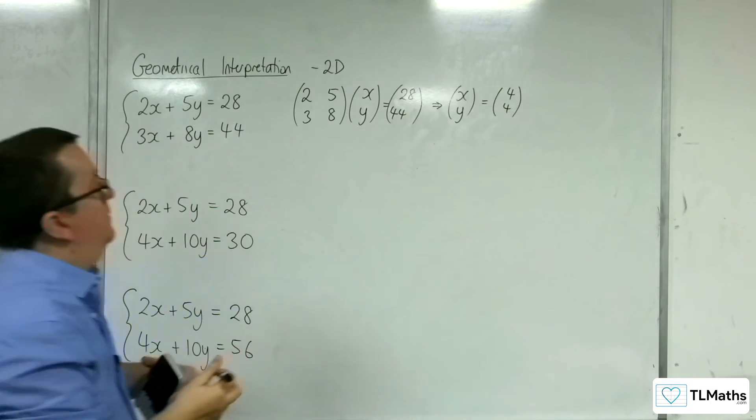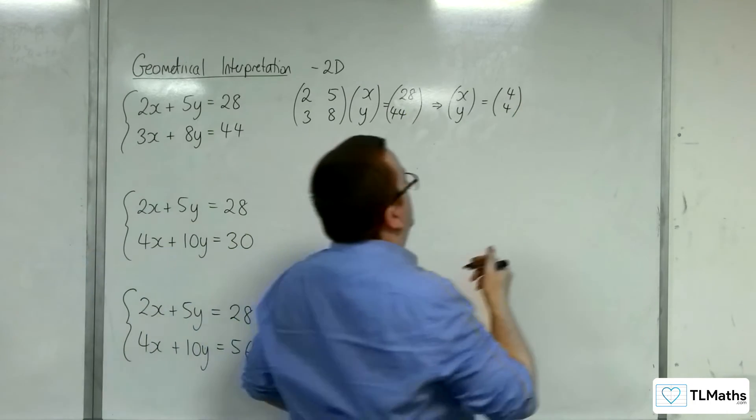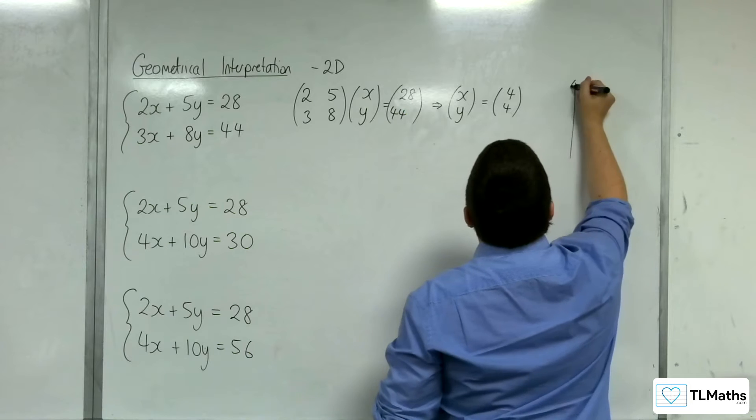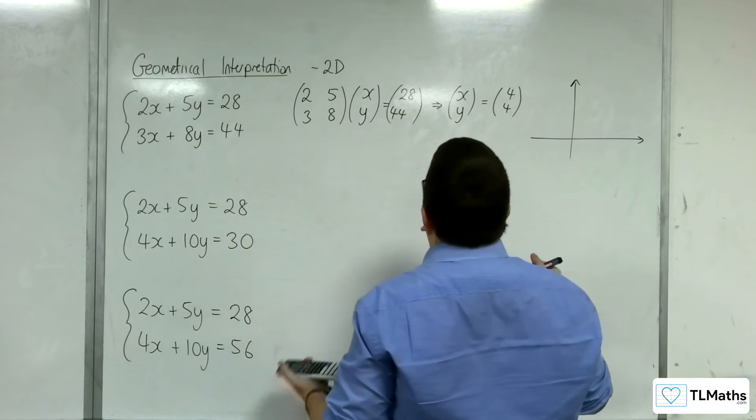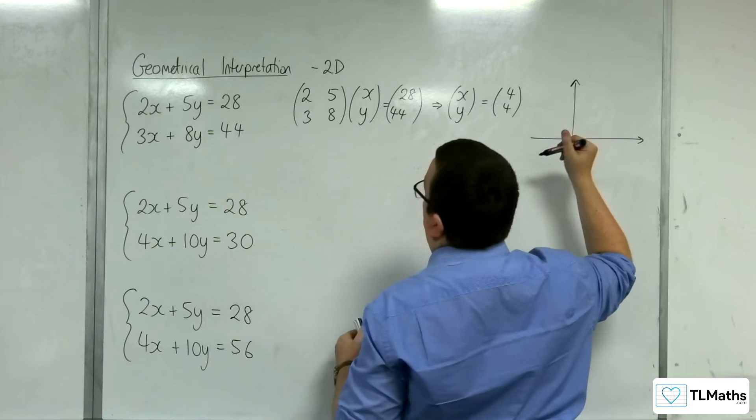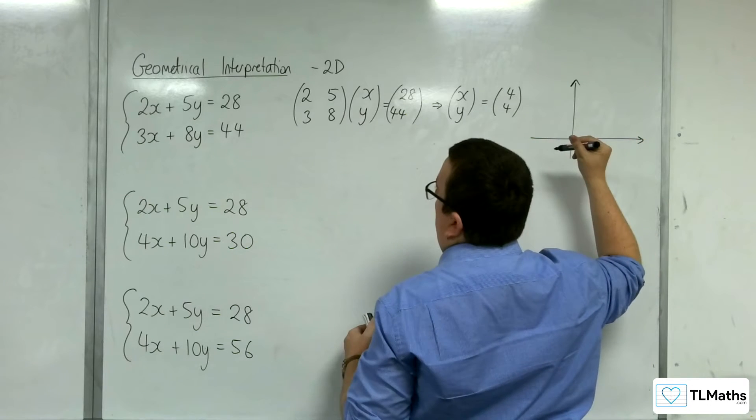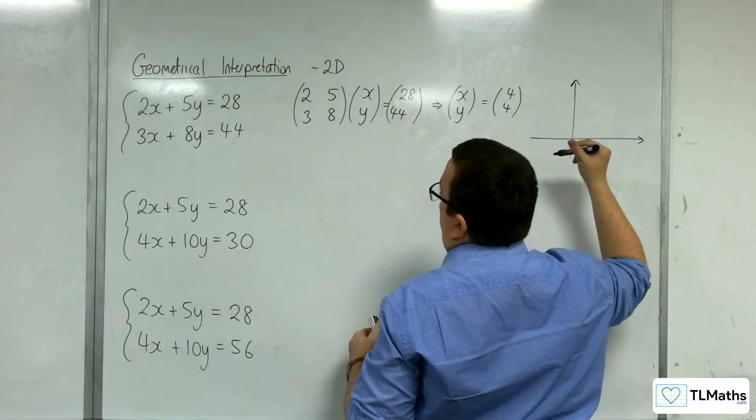Okay. Now, what that's identifying is that we have these two lines. Okay, 2x plus 5y equals 28. I don't know. So when y is 0,